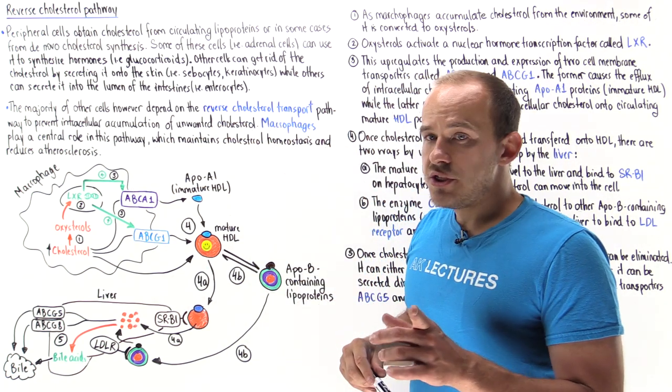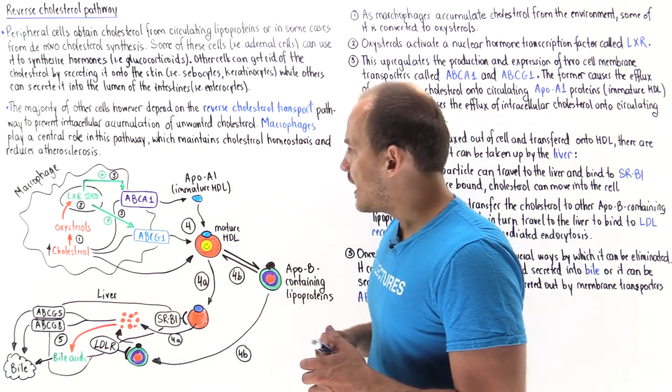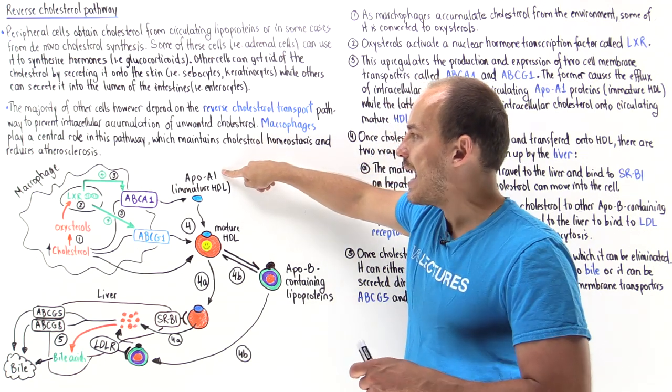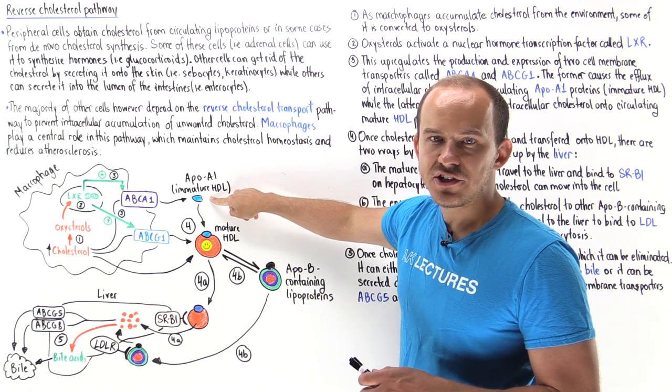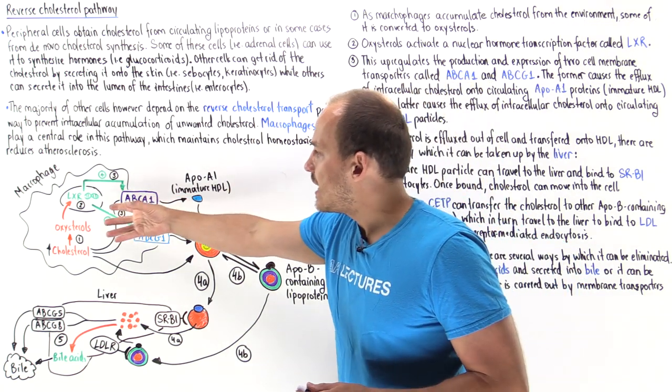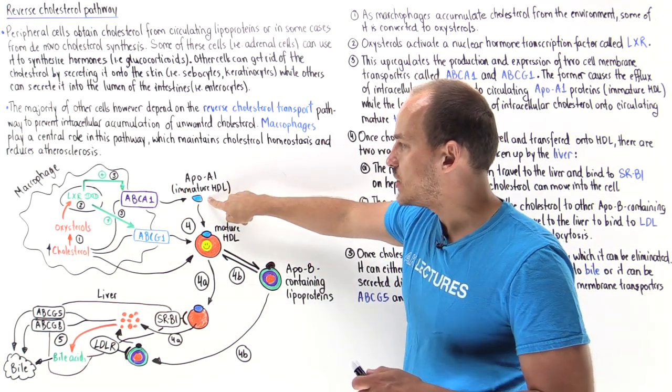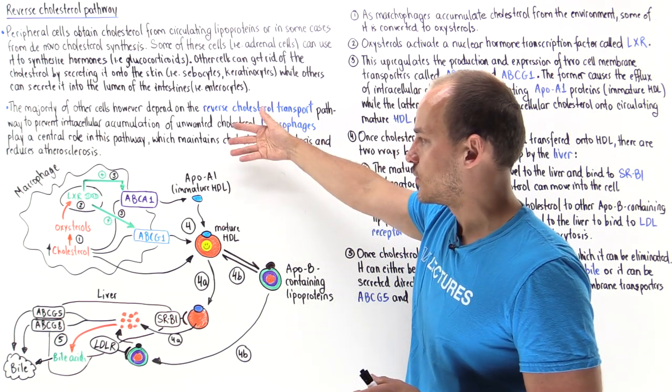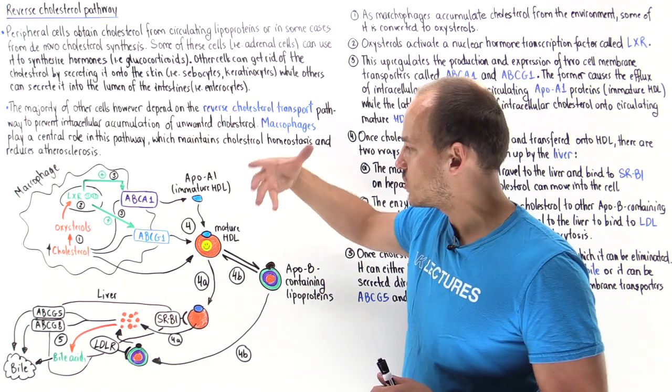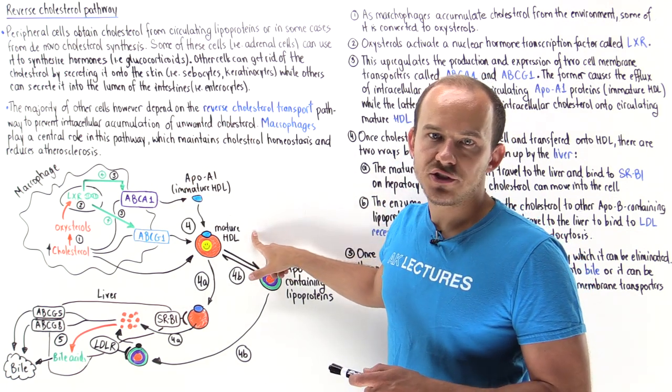Now, ABCA1 allows the movement of cholesterol onto circulating ApoA1 protein. Remember, these are immature HDL particles. As more and more of the cholesterol moves into these immature HDL particles, and then it's converted into cholesterol esters, eventually we help form mature HDL particles.